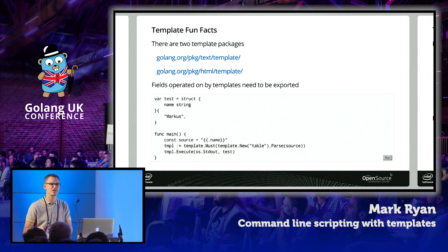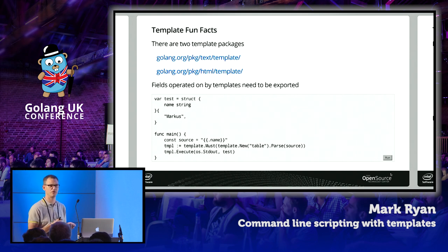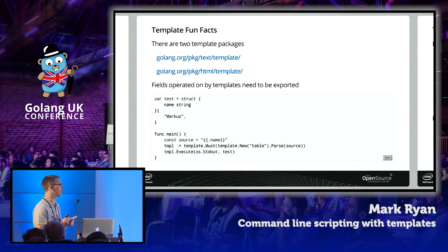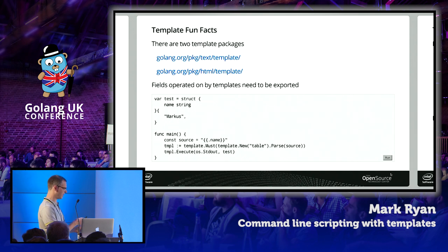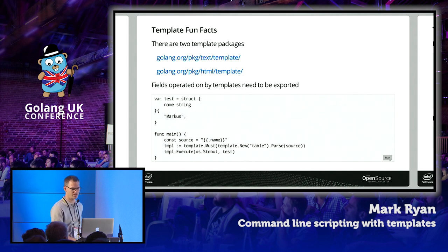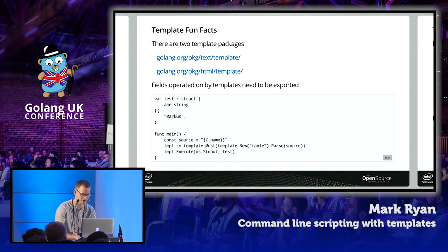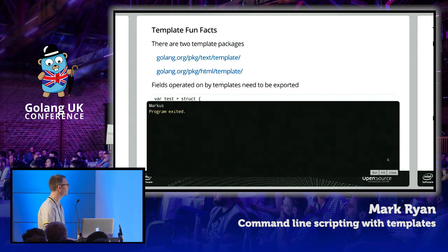When you start typing template.parse, goimports will automatically insert an import for html/template, which may not be what you want. Fun fact number two: you can access structure fields from inside a template, but only if those fields are exported. If you have a variable with an unexported field called name and a template tries to access it, nothing is output. If you export it, you do get output.